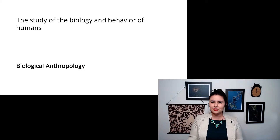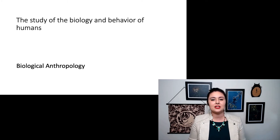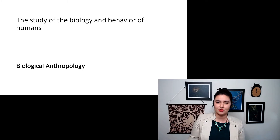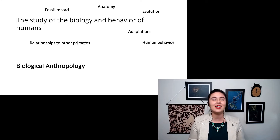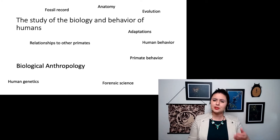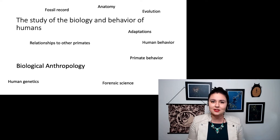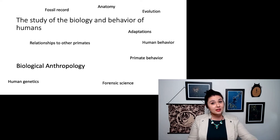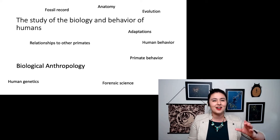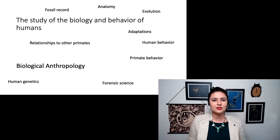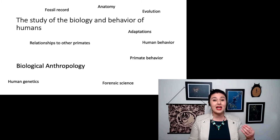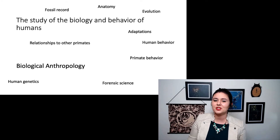Biological anthropology is the study of the biology and behavior of humans. Within this, there are a whole lot of things we can look at, and we'll be touching on most of these at least a little bit in this course. We will end the course talking about the fossil record, but we'll also talk about anatomy. We'll spend a good chunk on evolutionary theory and how we can use that to better understand ourselves. We'll also be talking about adaptations that humans have, a little bit about our behavior, and a little bit about primate behavior as well.